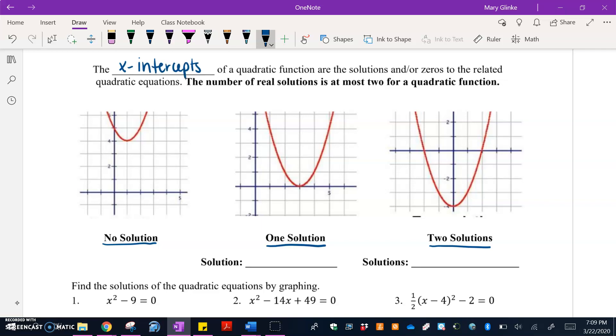So the x-intercepts are going to be known as your solutions and/or your zeros for quadratic equations. Looking at this, our x-axis here on the first one is not crossed at all. In the second one, it's touched in just one spot. And in the third one, it touches in two spots. You will not see a quadratic function cross the x-axis at more than two places. You can have at most two solutions for a quadratic.